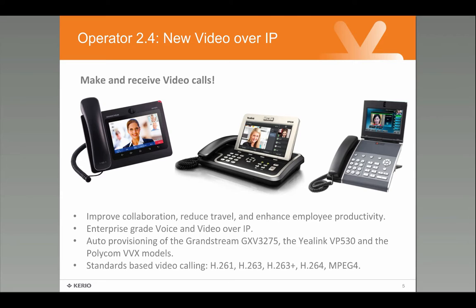The phones shown here are the three that we auto-provision. This is the Grandstream GXV 3275 — an HD video phone up to 720p at 30 frames per second. We also have the Yealink, which we can auto-provision, and that does 720 by 480 video also at 30 frames per second. And that's the Polycom phone on the right-hand side. All these will auto-provision with Operator.